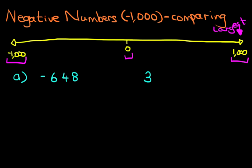The smallest number on this number line is here. It's not 0, it's minus 1000. So now let's have a look at our question. Minus 648. Now where do you think that is on the number line? That would be roughly somewhere about here. Minus 648. Now we're going to have a look at the next number which is 3. Where do you think 3 is on the number line?